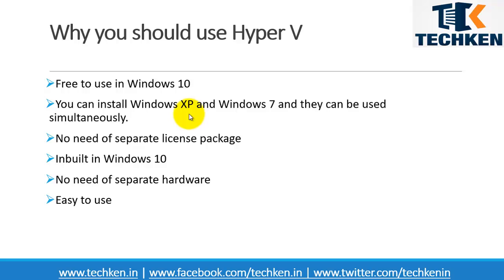To use Hyper-V, you don't need separate hardware. For example, if you want to use a VMware product, you need to go for separate hardware like installing an ESXi server. Hyper-V needs a minimum of 4GB of RAM and a minimum of 100GB of hard disk space. If your PC has these configurations, you can easily install Hyper-V in your Windows 10 operating system and use it without any issues — no separate hardware required.